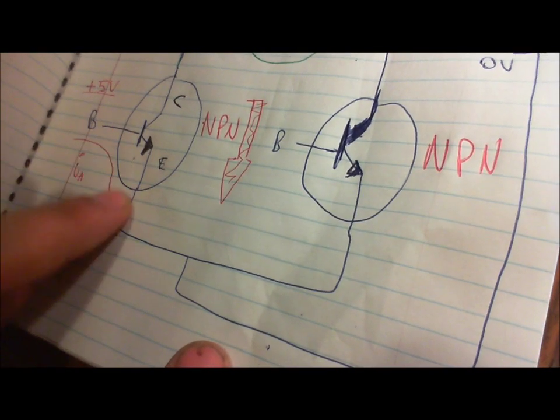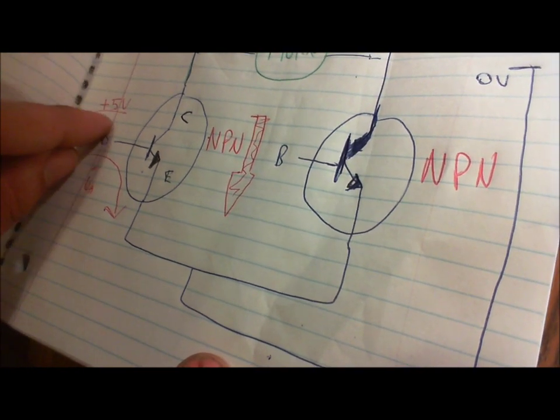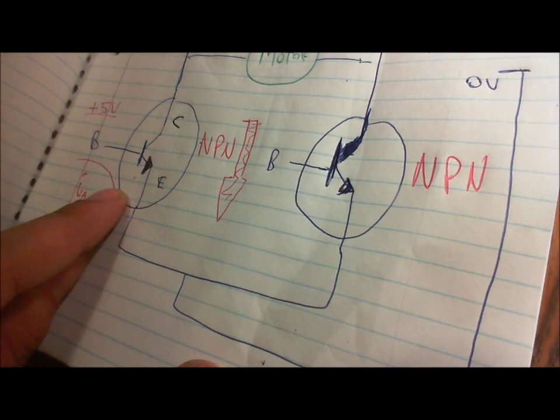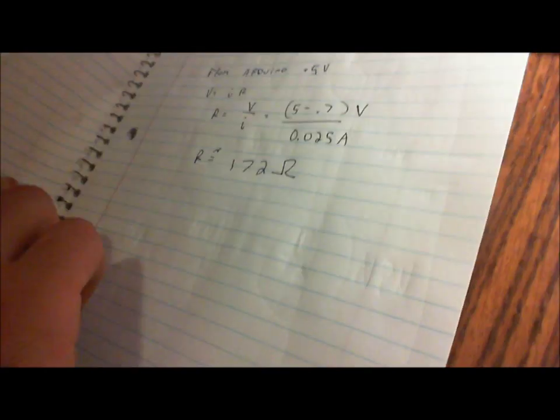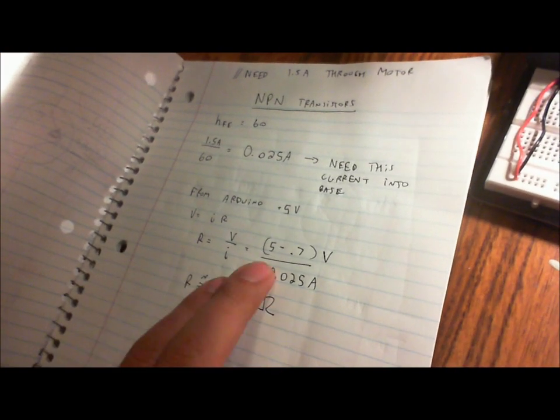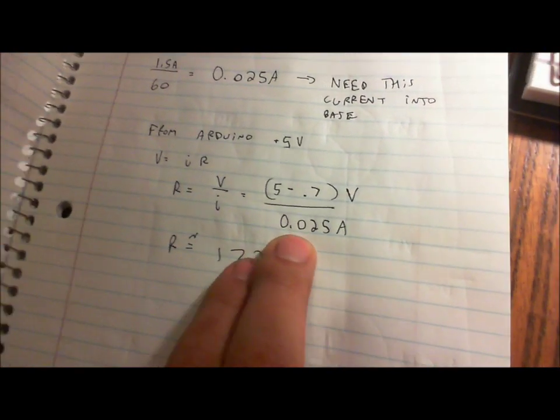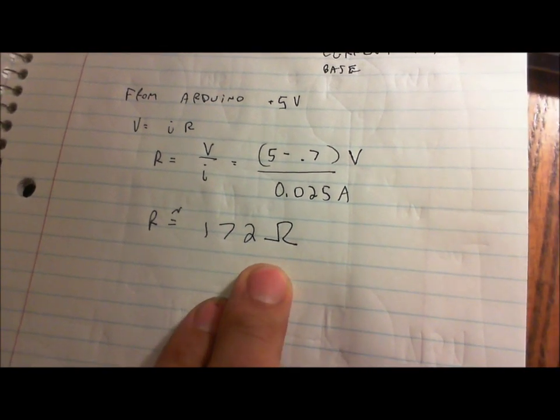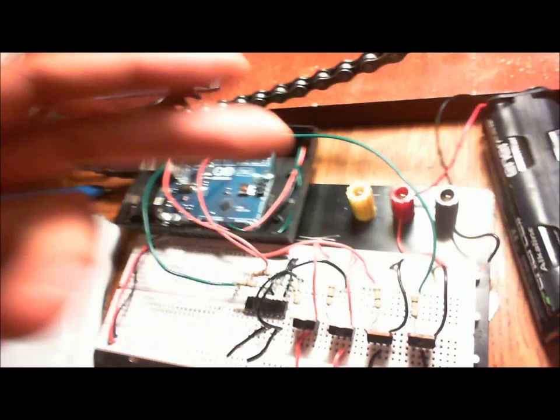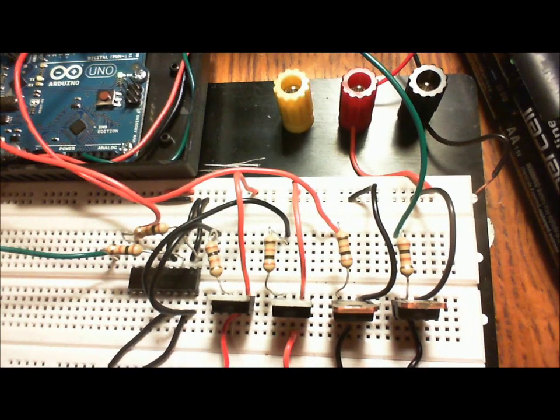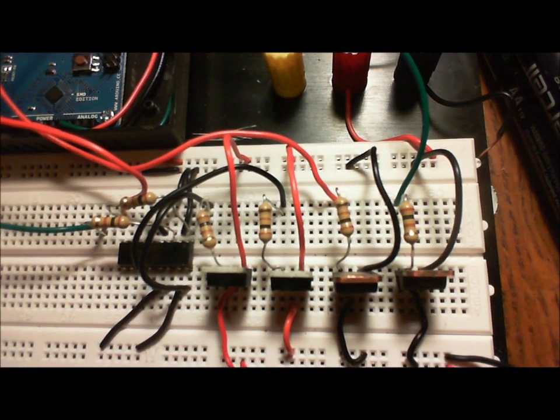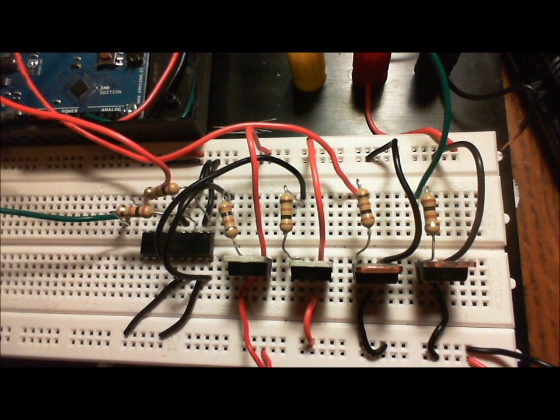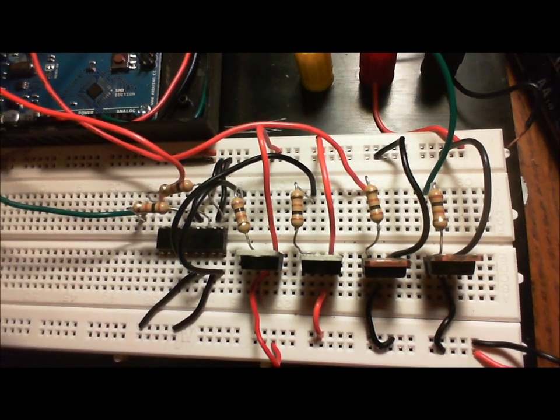So this is a 5 volts signal from the Arduino. And this 5 volts, minus the 0.7 voltage drop, divided by the current we need, gives us an approximate value of 172 for our resistors. Now they don't make 172 ohm resistors or 142 ohm resistors, but they do make 100 ohm resistors. And to be conservative, to make sure these transistors are fully saturated, we threw a small resistor on there, and it works very nicely.